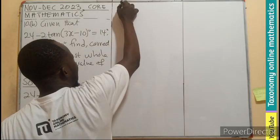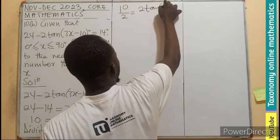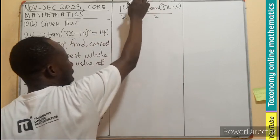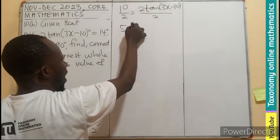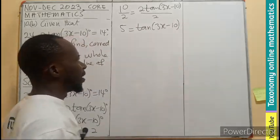So divide by 2, meaning 10 divided by 2, 2 tan(3x minus 10) divided by 2. So 5 equals tan(3x minus 10).